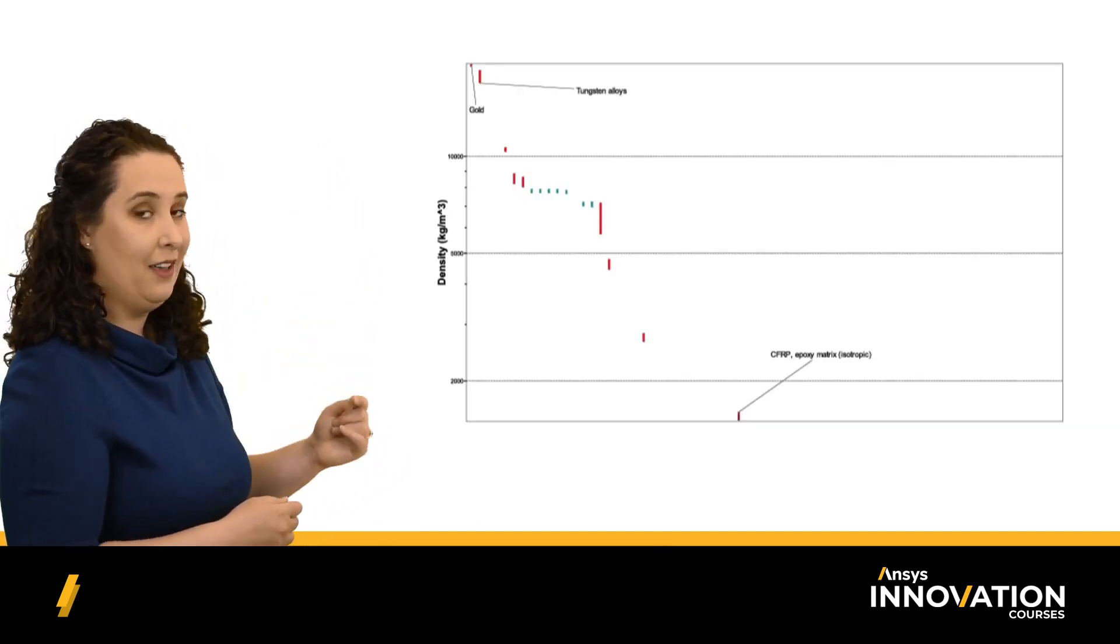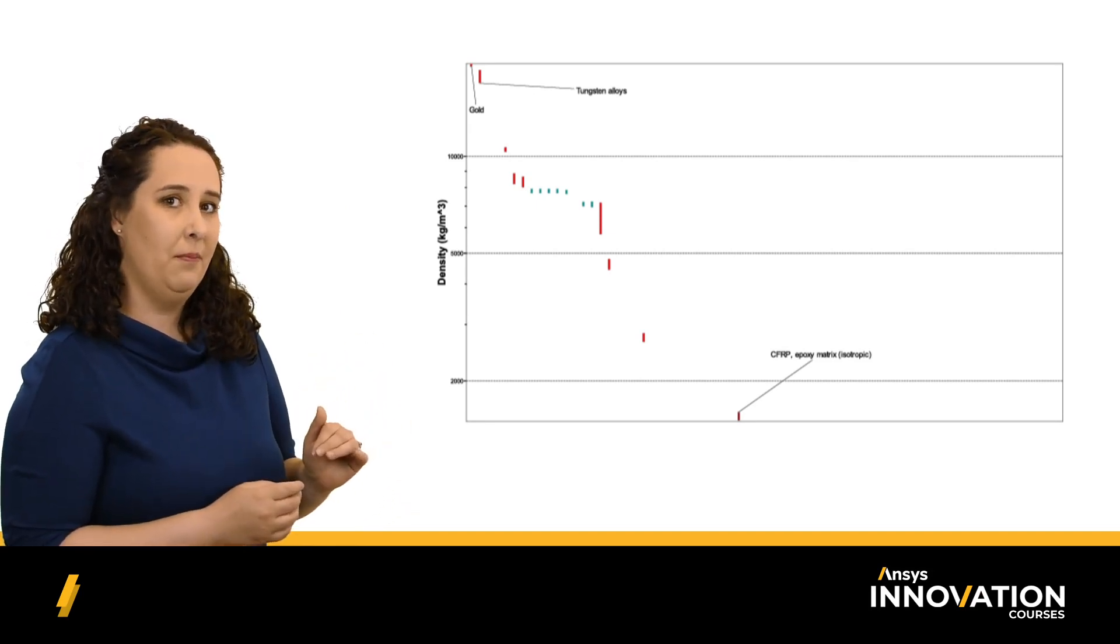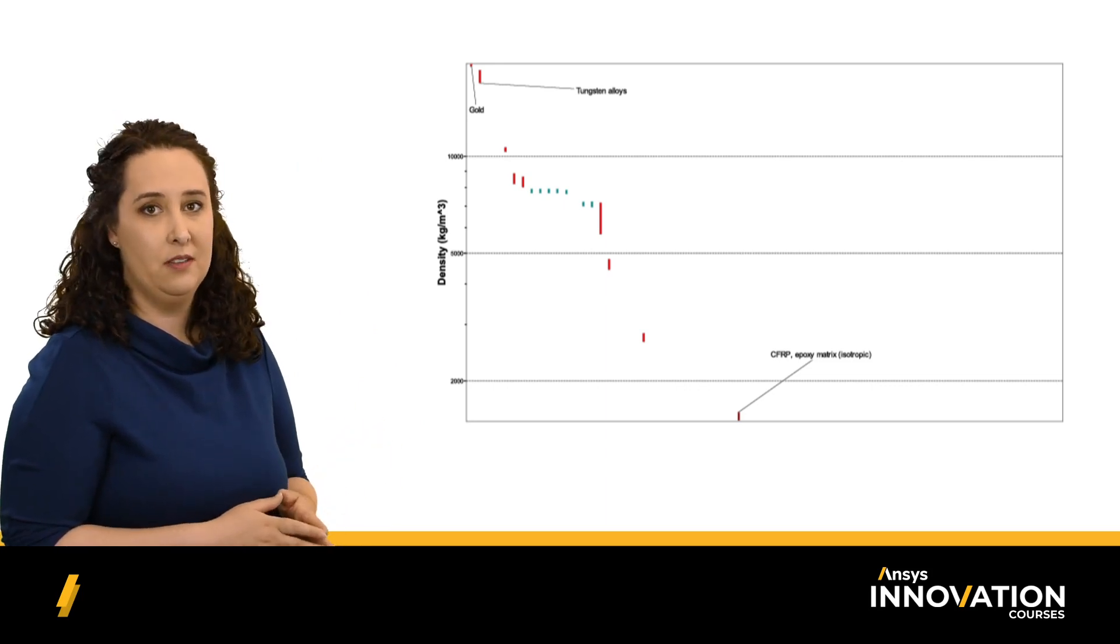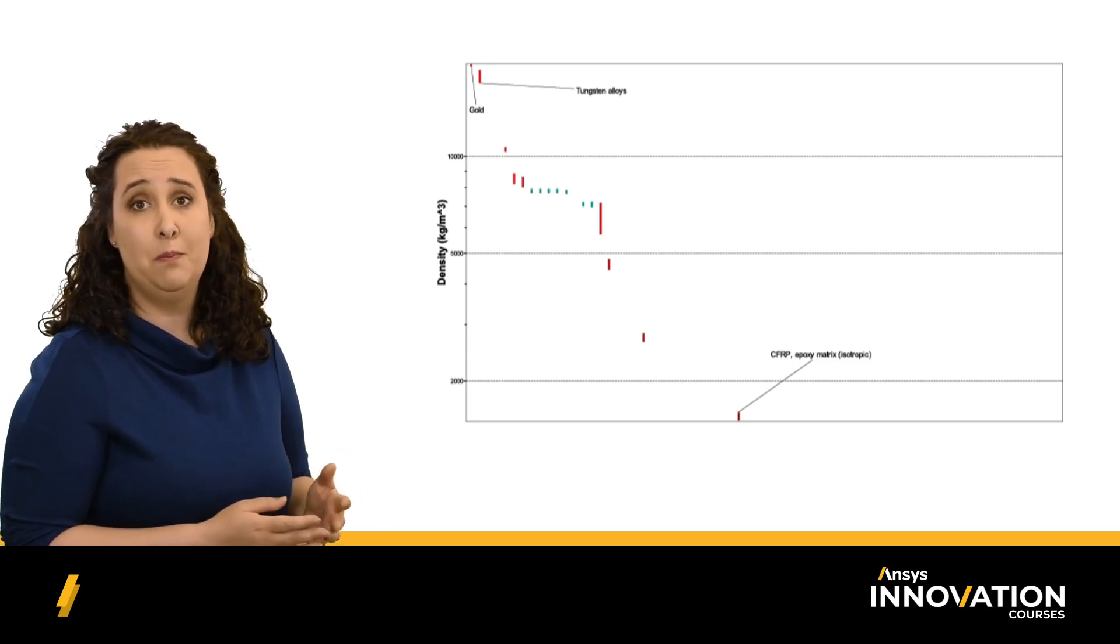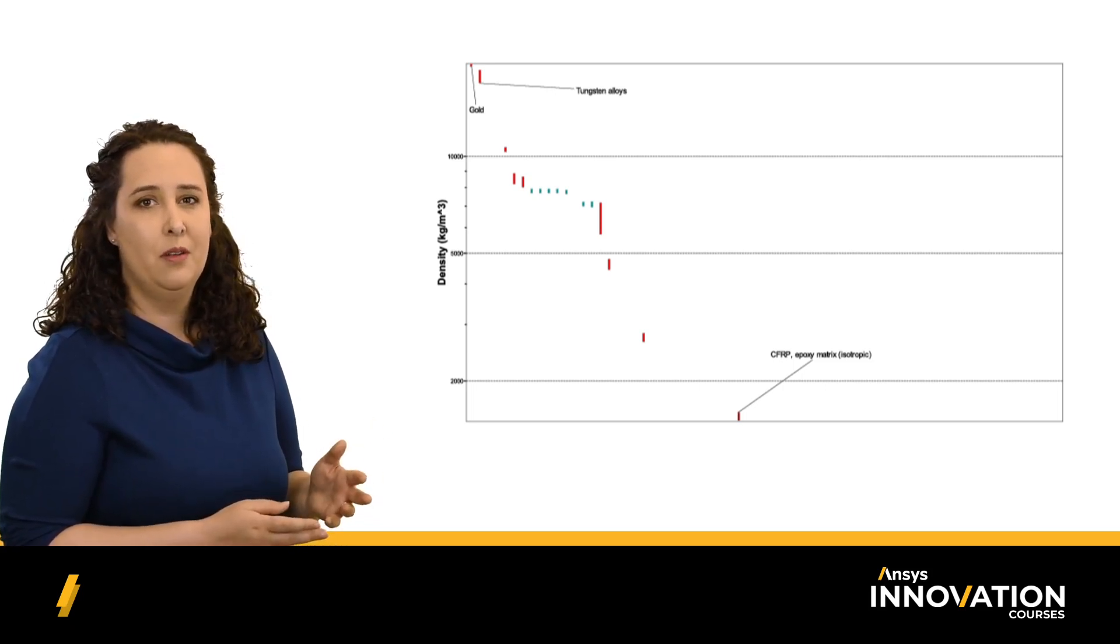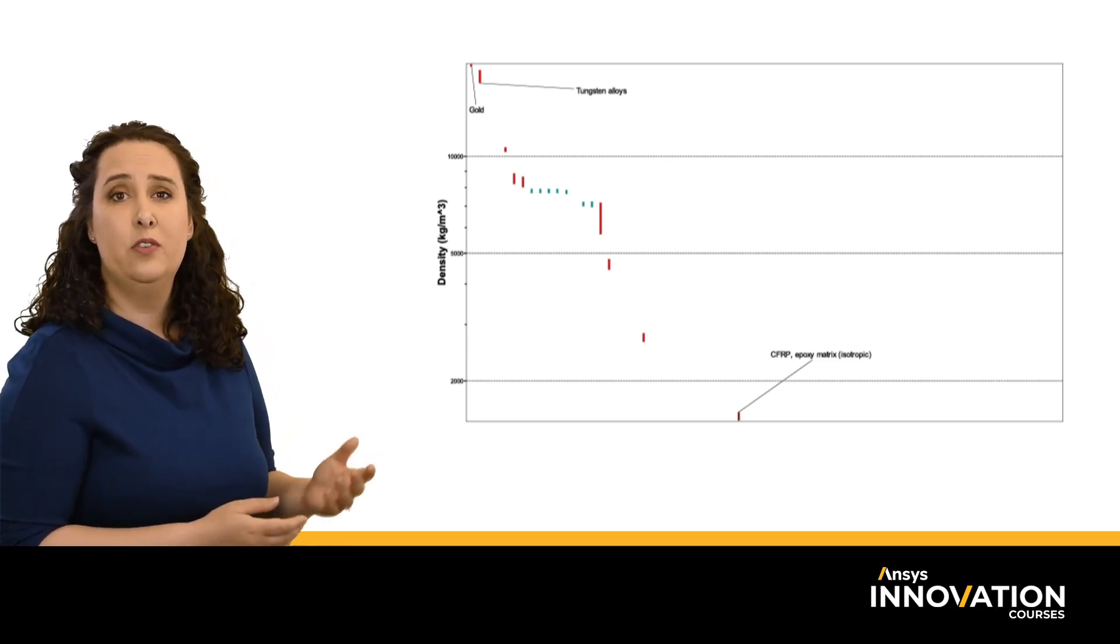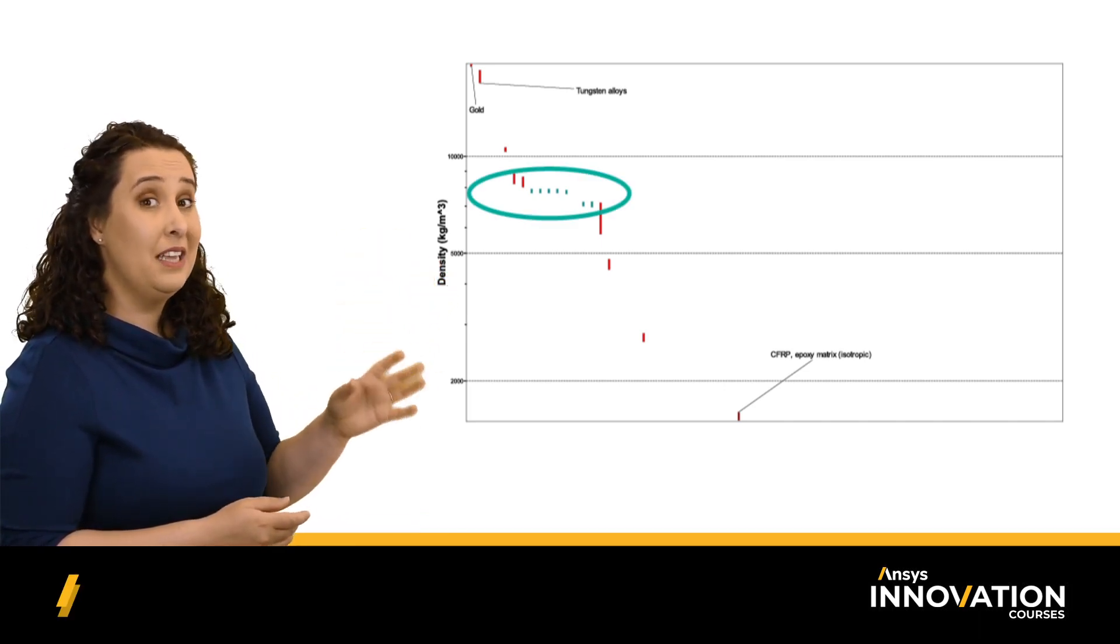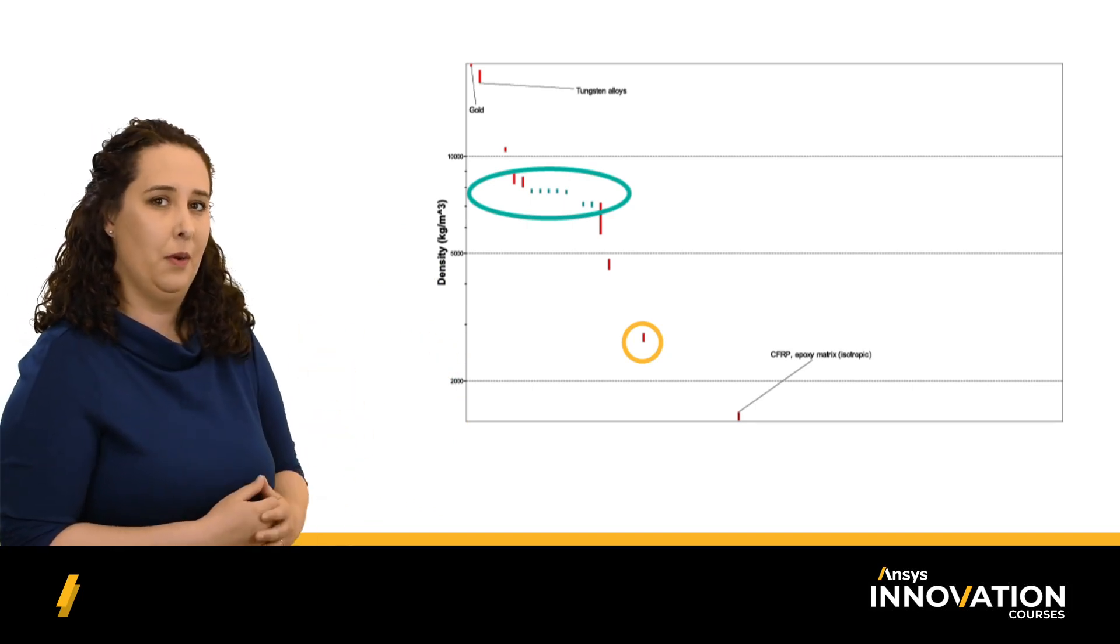So let's plot density as a bar chart, once again, putting density on the y-axis. Now we're trying to minimize our density. And we can see a clear winner, our carbon fiber composites. Metals like gold and tungsten are far too dense and shouldn't be considered. But what about materials like steel or aluminum? All of our ferrous alloys are shown on this chart in teal, over here. And aluminum is a very lightweight metal, as we can see here. But it's not quite as light as our carbon fiber composites.